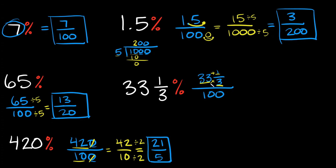What's 3 times 33? That's 99. And 99 plus 1 is 100. So 33 and a third written as an improper fraction has a numerator of 100. What goes in the denominator? Whatever number you originally had — which is 3. So 33 and a third converted to an improper fraction is 100 over 3.